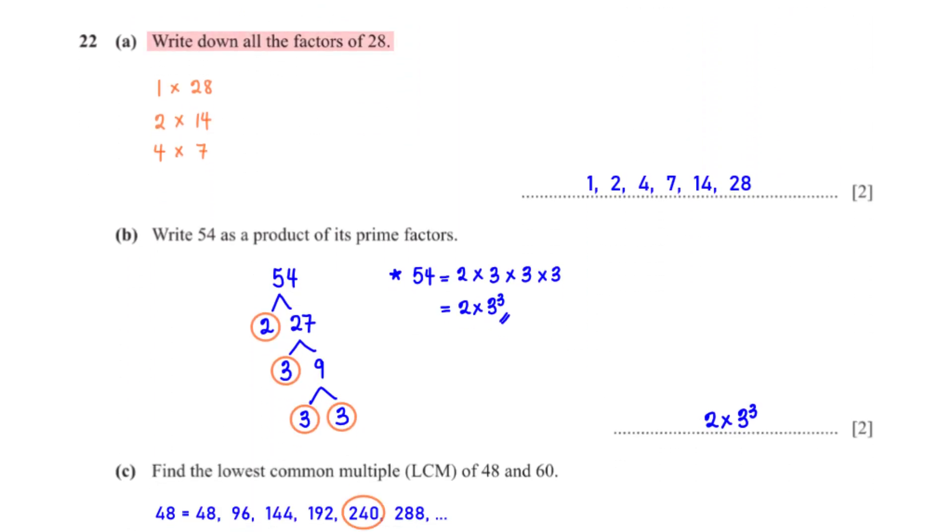Write down all the factors of 28. To get the factors of 28, we first need to list the numbers that multiply to give us 28. From this, we see that the factors of 28 are 1, 2, 4, 7, 14, and 28.